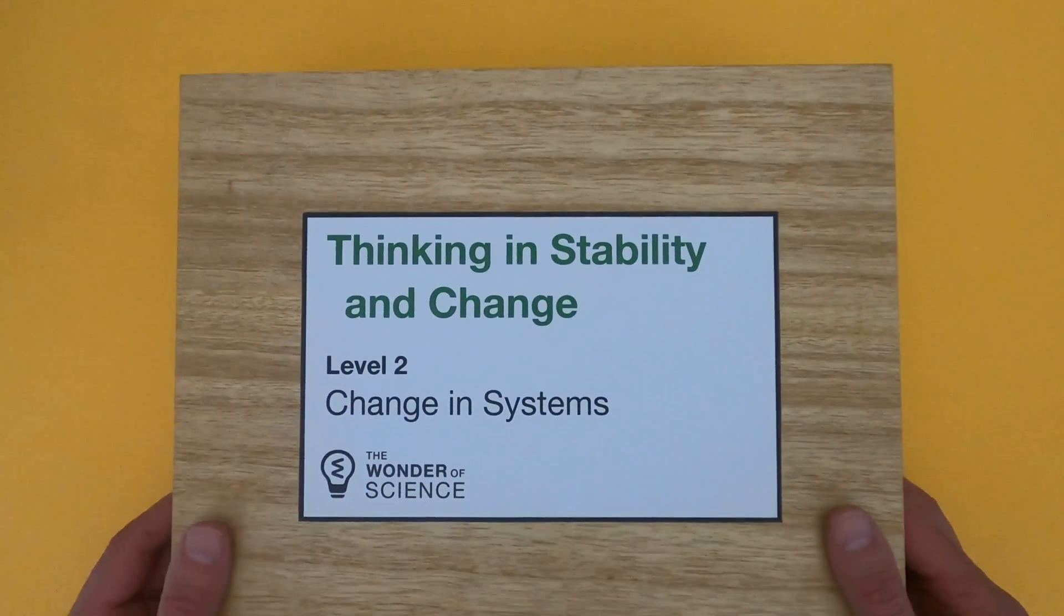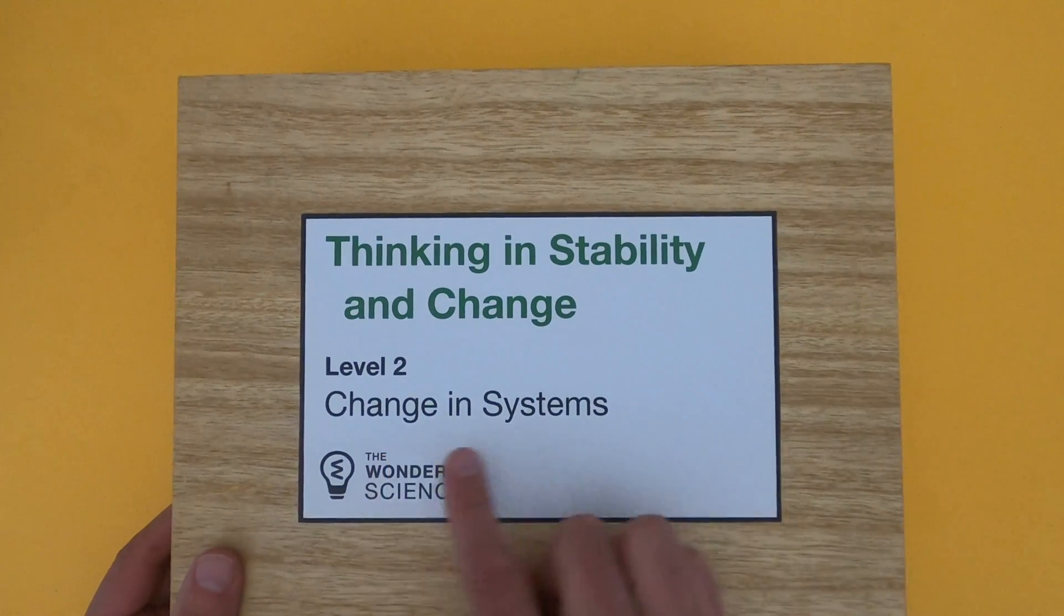Hi, it's Mr. Andersen and this is Thinking in Stability and Change, level two change in systems.